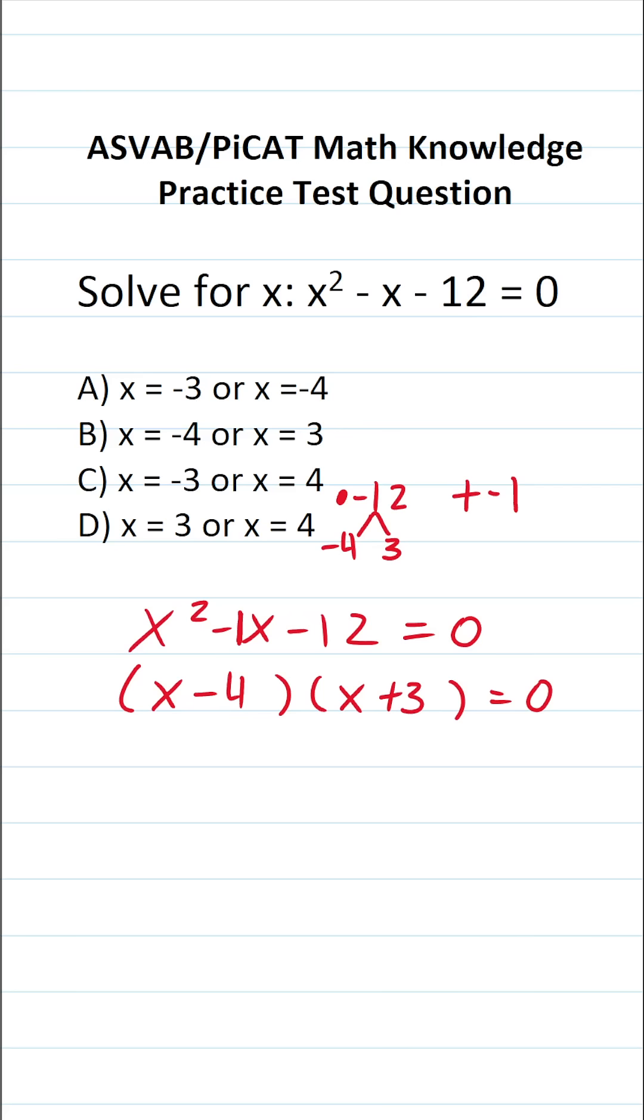we're going to set each of these to 0 independently and solve for x accordingly. This becomes x minus 4 equals 0, x plus 3 equals 0. Let's solve these separately.